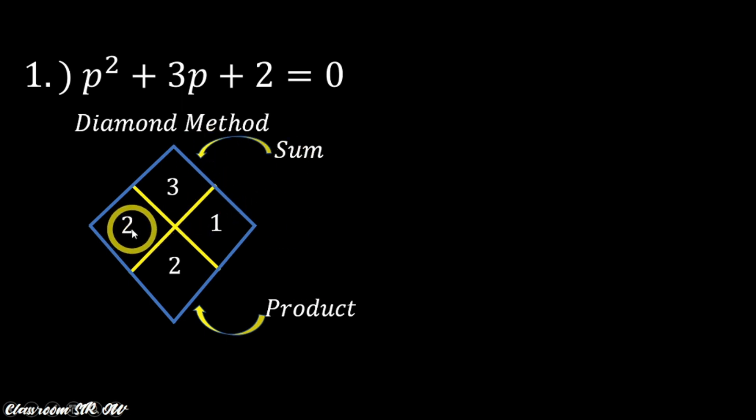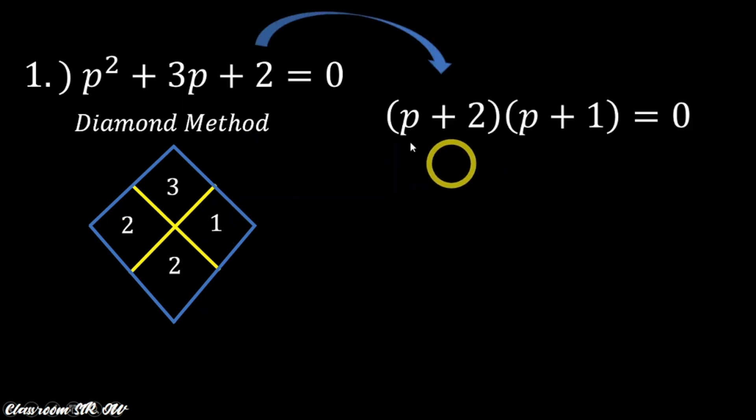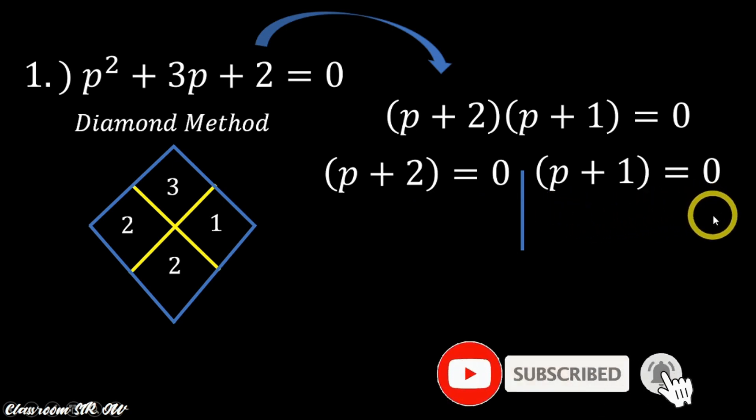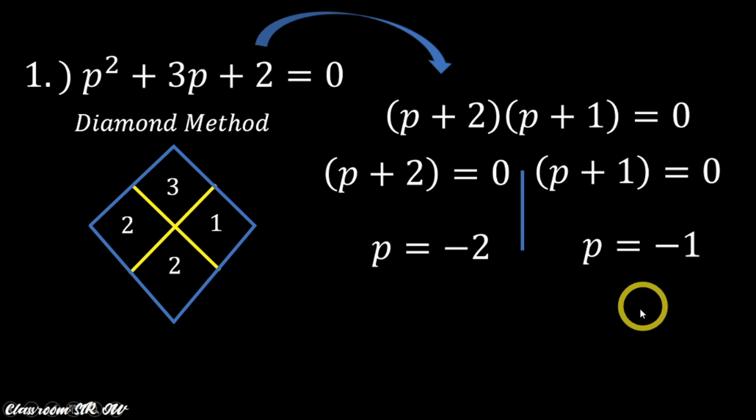So what is the use of 2 and 1? That will be our factor already of the given quadratic equation, which is now p + 2, p + 1 = 0. Equating them both to 0, we have p + 2 = 0 and p + 1 = 0. So we have values of our p which is -2 and -1. Now you can check your accuracy by substituting either of the values of p, which is -2 or -1, to the given quadratic equation.